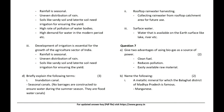There is an urgent need for water conservation in India because: rainfall is seasonal, there is uneven distribution of rain, soils like sandy soil and laterite soil need irrigation for ensuring yield, there is a high rate of pollution of water bodies, and high demand for water in the modern period.